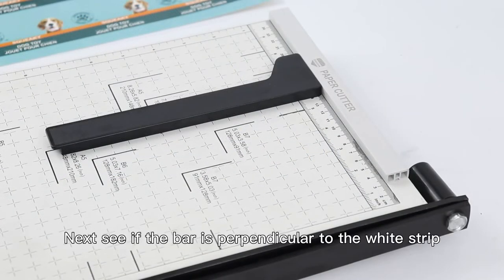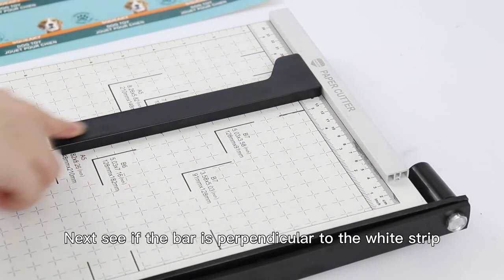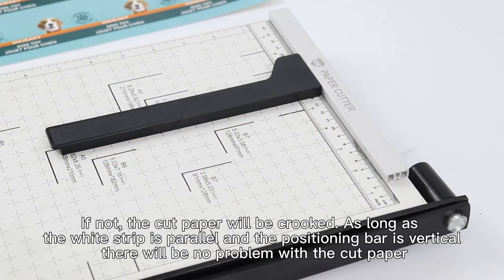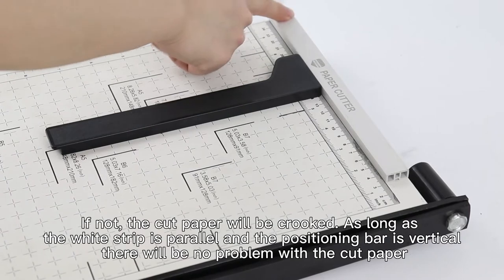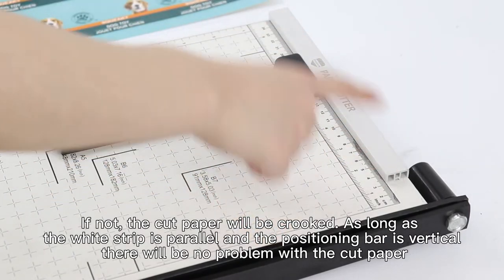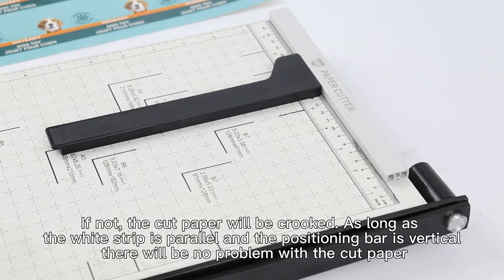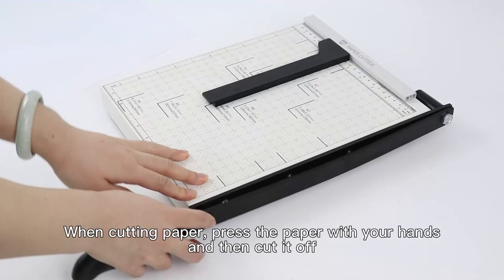Next, see if the positioning bar is perpendicular to the white strip. If not, the cut paper will be crooked. As long as the white strip is parallel and the positioning bar is vertical, there will be no problem with the cut paper.